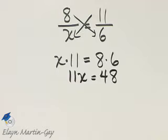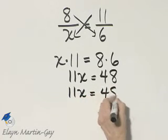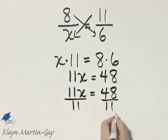And then how do I solve this equation for x? I solve by dividing both sides, the left side and the right side, by the coefficient of x, which is 11.